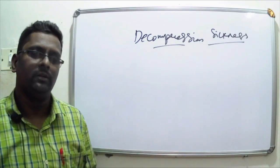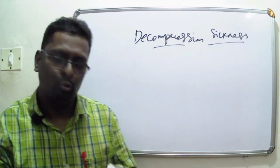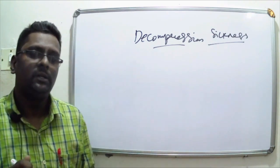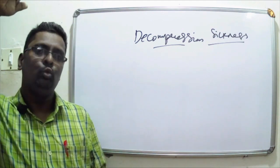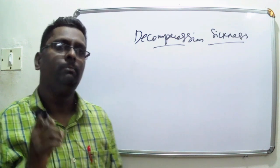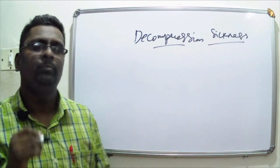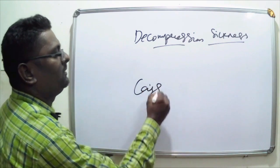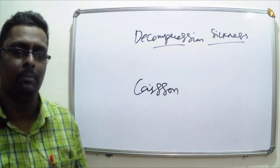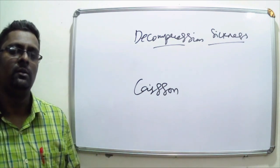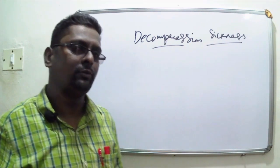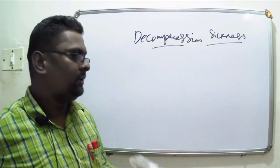Who are the affected individuals? People who dive underwater — that is, deep-sea divers — aviators who ascend to high altitudes rapidly from the surface of the earth, and people who work in caissons, which are watertight chambers where high pressure is maintained to keep the water out.